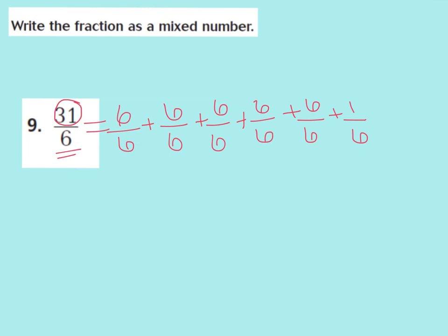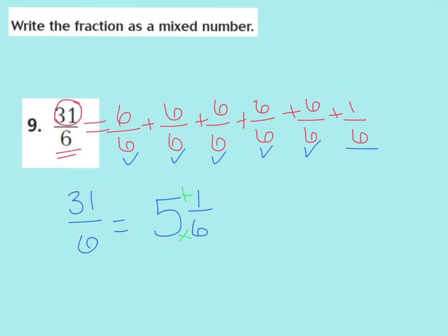Now that I have all of my wholes in my addition, I'm going to count how many wholes I have altogether: 1, 2, 3, 4, 5 wholes. So I'm going to write down 5 wholes, and I have a 1/6 left over. So 31/6 is equal to 5 and 1/6 as a mixed number. I can check my work by doing multiplication and addition: 6 times 5 gives me 30, and 30 plus 1 is 31, and my denominator stays as 6. So 5 and 1/6 is correct.